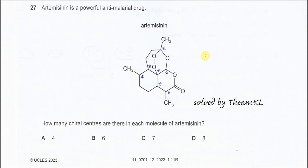Question 27. How many chirocenters are there in this molecule? So first we start from this carbon. This carbon CH3 has three same groups, so this is not chirocarbon.